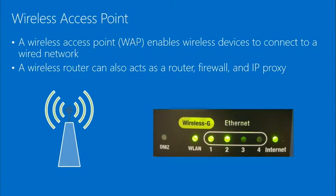A wireless access point enables wireless devices to connect to the network, and can also act as a router, firewall, and IP proxy. Looking at a typical home wireless device, it connects both wired Ethernet devices and wireless devices together and out to the internet. It might be a switch, a router, and because it connects wireless to wired with different media on either side, it's technically also a bridge.